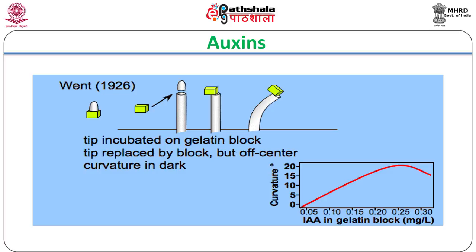In classical experiments by Went and others before him, it was known that a chemical signal synthesized in the coleoptile tip moved downwards and triggered coleoptile growth.